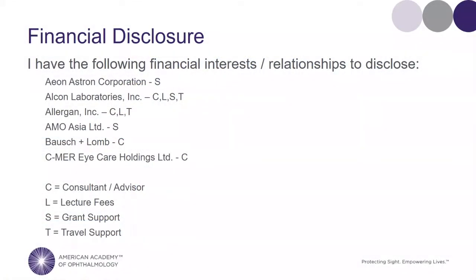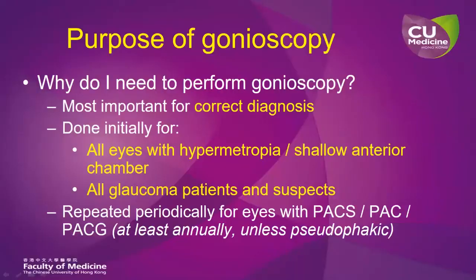These are my financial disclosures. Why do we need to perform gonioscopy? First of all, it is very important for correct diagnosis. It is done initially for all eyes with hypermetropia or shallow anterior chamber, and also for all glaucoma patients and glaucoma suspects. It needs to be repeated periodically for eyes with primary angle closure disease, at least annually, unless the patient has become pseudophakic.